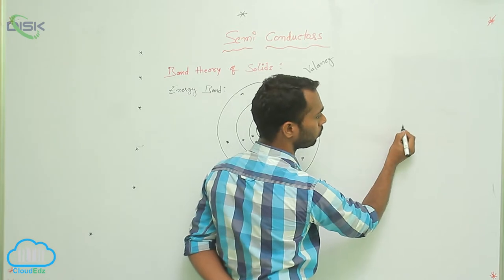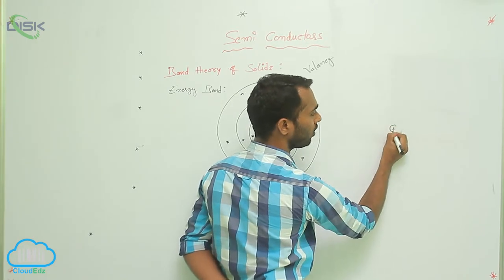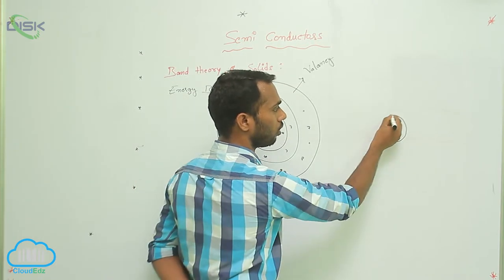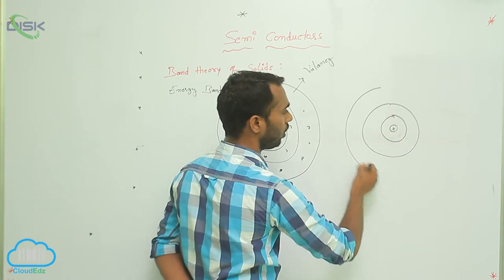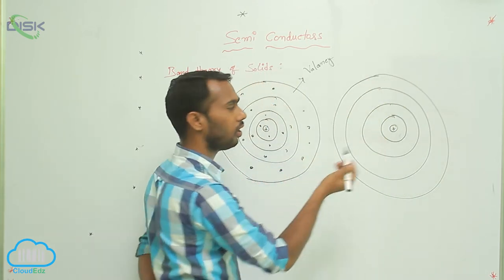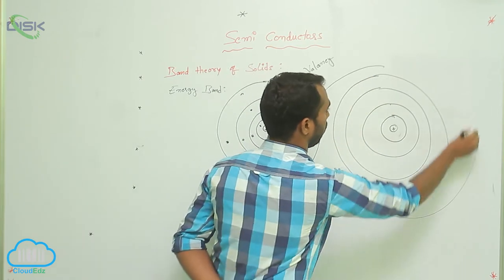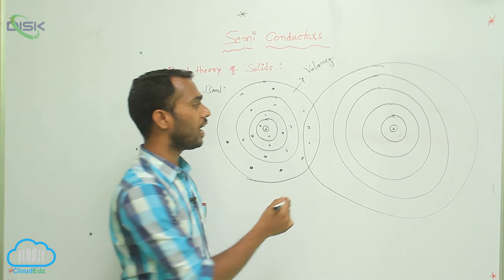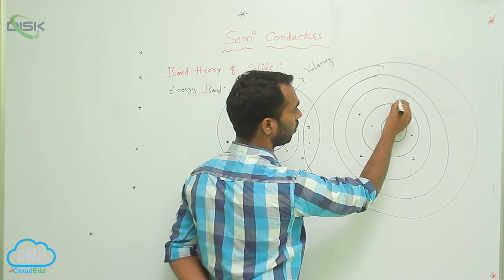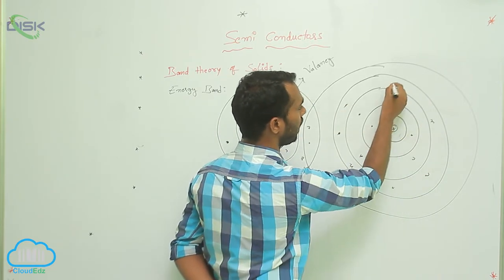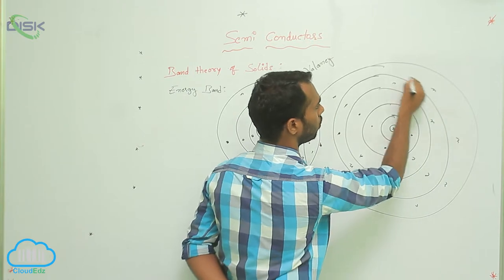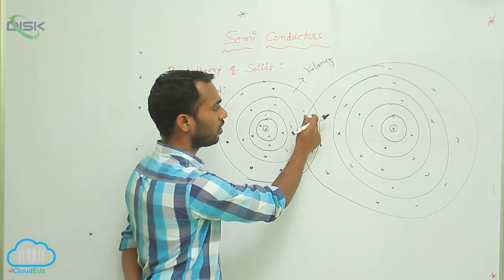Now taking one more atom — that atom also consists of a nucleus at the center, with a first orbital, second orbital, third orbital, fourth orbital, and one more orbital. This atom also consists of electrons revolving around the nucleus in orbitals. The last orbital here is the valency orbital.